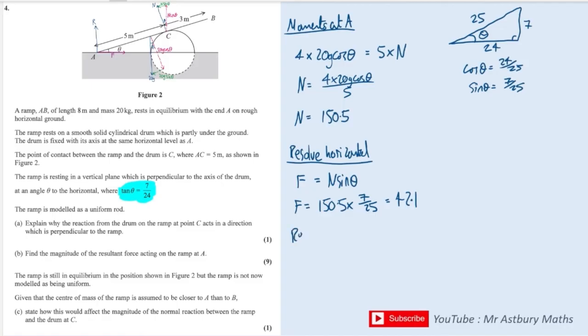And then next, we resolve vertically. And we have R going directly upwards. And we also have N cos theta in red at the top there. That's also going vertically upwards. And that must equal all of the forces going vertically downwards, which is the blue force in the middle, which is just 20G. And that means that R is equal to 20G minus N cos theta. And we know that N cos theta is 150N multiplied by cos theta, which is 24 over 25. And this as well can be resolved. And we get 51.5.